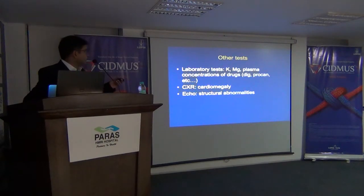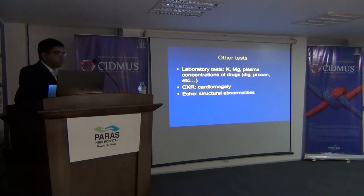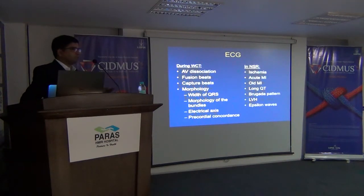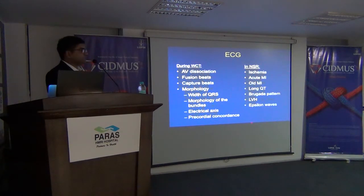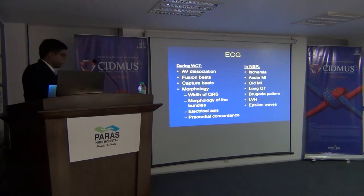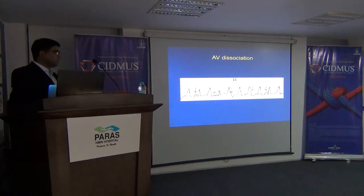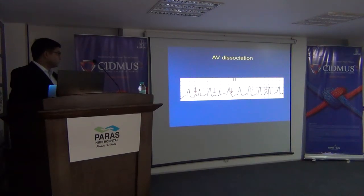Regarding other tests, you can do some laboratory tests, chest X-ray, and echocardiography. And of course with the ECG you can always get a much more conclusive picture — is it really in sinus rhythm, or is it a wide-complex type? As you can see in this ECG, the P wave is here somewhere, then comes here, then comes here, then goes in the back, then falls on there. This is what is classical of AV dissociation.